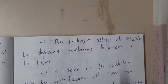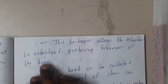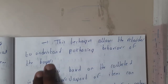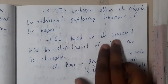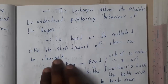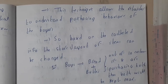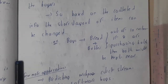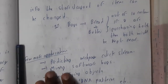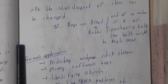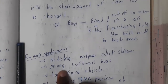This is a frequent pattern, and this concept is market basket analysis. The technique allows the retailer to understand the purchasing behavior of buyers. Based on the collected information, store layout of items can be changed, and combos can be created — like buy one get one free, double rate, or triple rate deals.